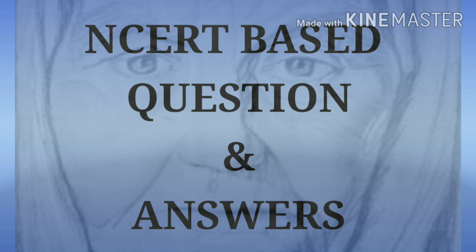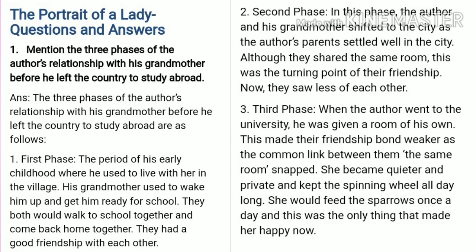Let's begin with the NCERT-based question and answers. Question 1: Mention the three phases of the author's relationship with his grandmother before he left the country to study abroad. In the first phase, it covers the period of his early childhood where he used to live with her in the village and they had a good friendship. In the second phase, the author and his grandmother shifted to the city as the author's parents settled there. In the third phase, the author went to university and was given a room of his own, which made their friendship bond weaker as the common link between them snapped.